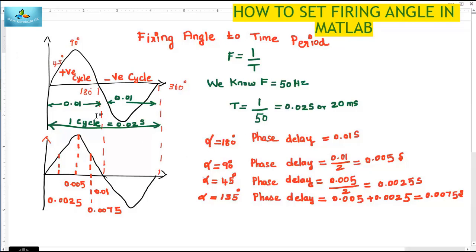Now let us represent the firing angle of 180 degrees in the time domain. The time taken for completing one positive cycle is 0.01 seconds, and hence alpha equal to 180 degrees is represented as an equivalent phase delay of 0.01 seconds.